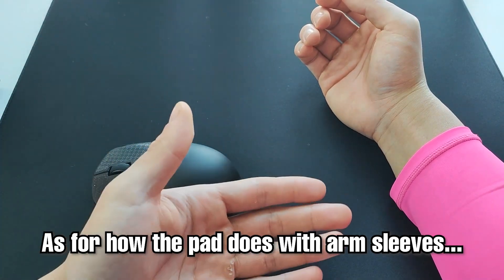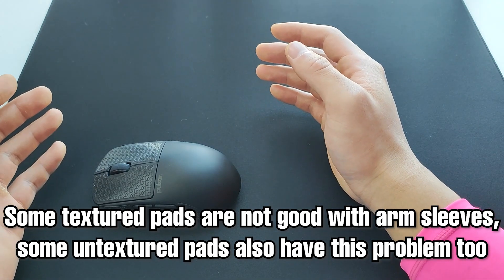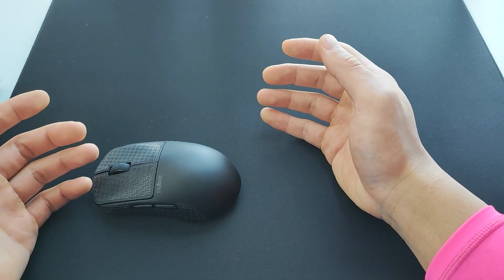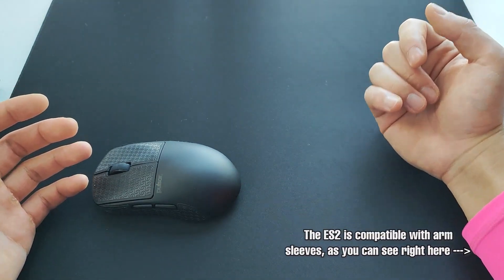Arm sleeve is also an important topic to discuss. Textured pads usually struggle with arm sleeves. However, that doesn't mean every untextured pad also works with arm sleeves. I'm happy to report here though, that the ES2 works perfectly with arm sleeves. There is essentially no drag and you get unrestricted arm movement.